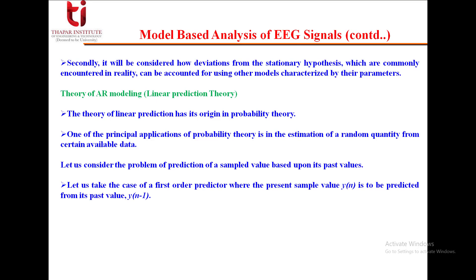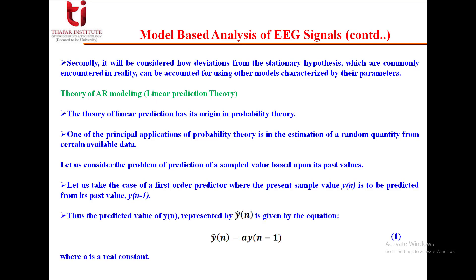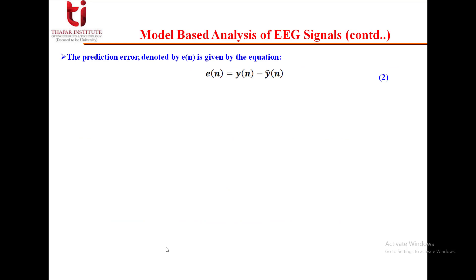Let us take the case of a first-order predictor where the present sample value y(n) is to be predicted from its past value y(n-1). As you can see in equation 1, the predicted value of y(n), represented as ŷ(n), is given as a·y(n-1), where a is a real constant. The prediction error e(n) is given as y(n) - ŷ(n), or equivalently y(n) - a·y(n-1).